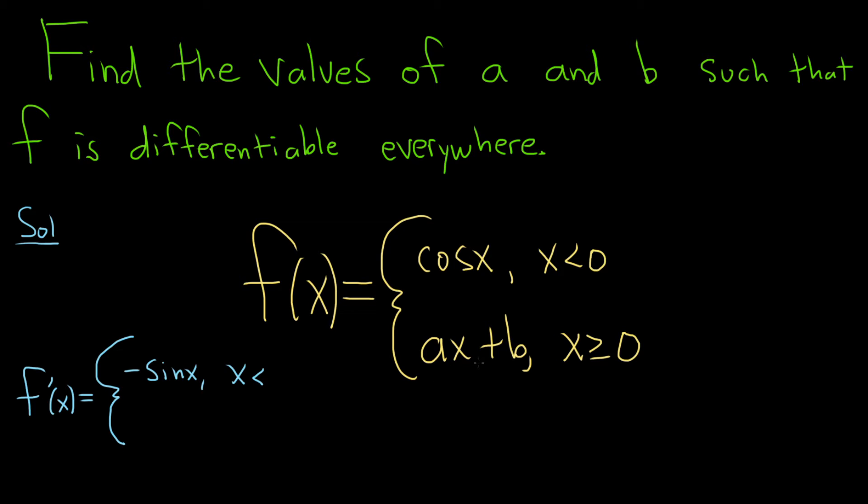For the second piece, the derivative is simply a, because the derivative of b is 0 and a is a constant, so the derivative of ax is just a. This is for x greater than or equal to 0.